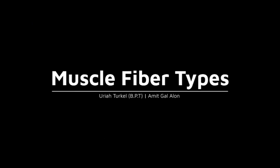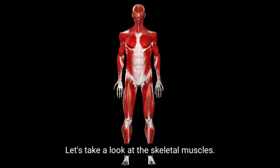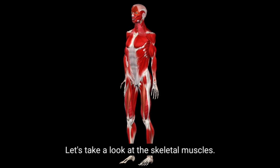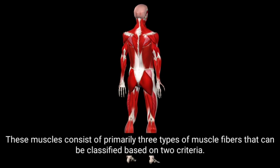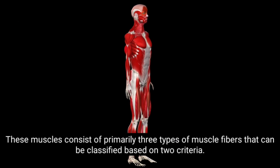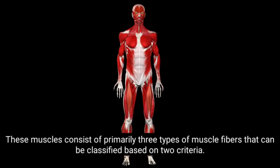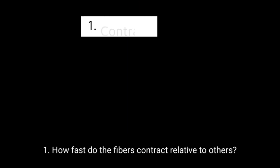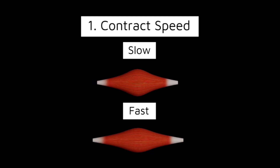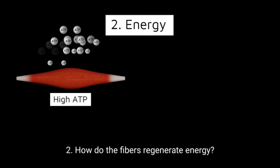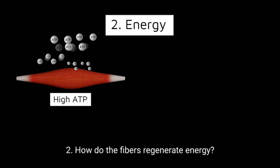Muscle fiber types. Let's take a look at the skeletal muscles. These muscles consist of primarily three types of muscle fibers that can be classified based on two criteria: first, how fast do the fibers contract relative to others, and second, how do the fibers regenerate energy?